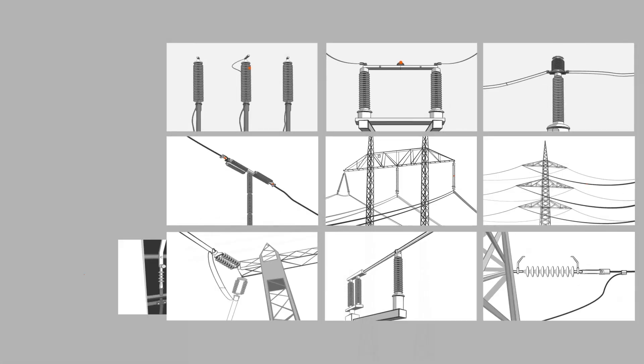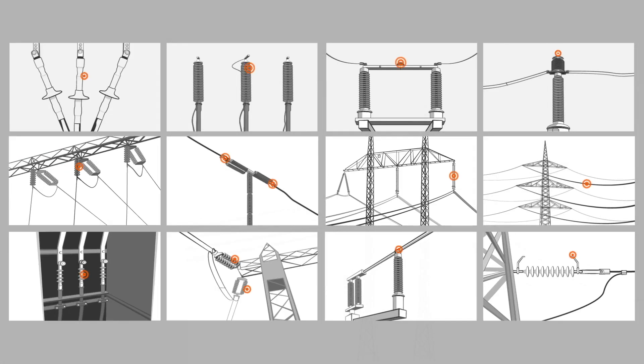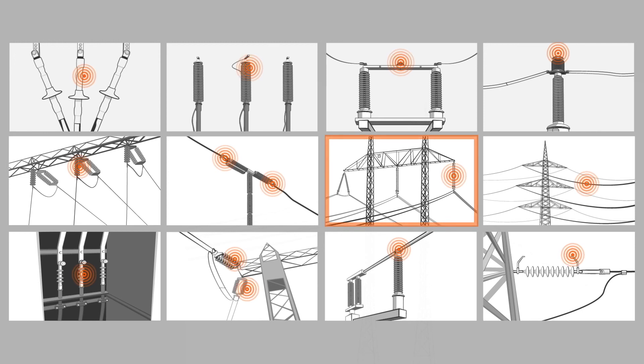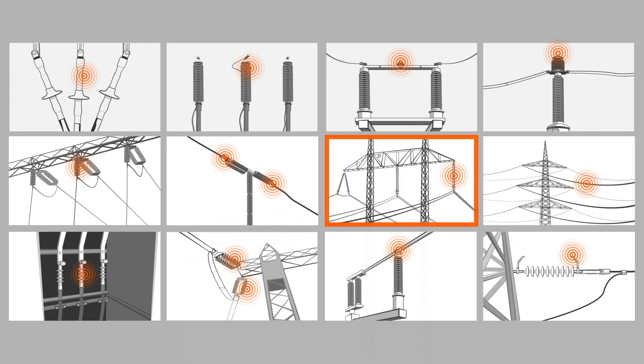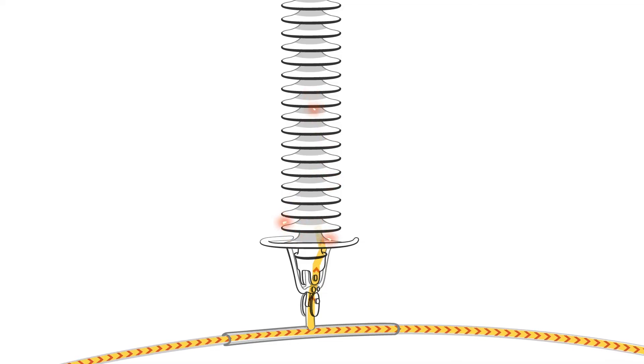There are many types of partial discharges. When a discharge happens along the surface of the insulator, it is called a surface discharge. Over time, the surface discharge will get worse, eventually leading to flashover, meaning a complete failure of the insulator.